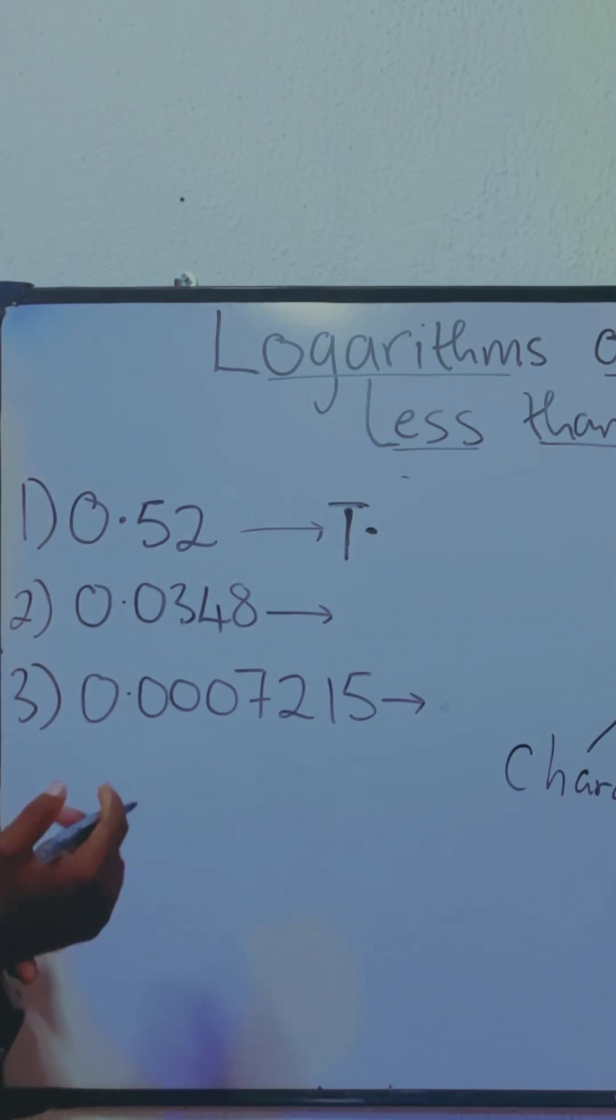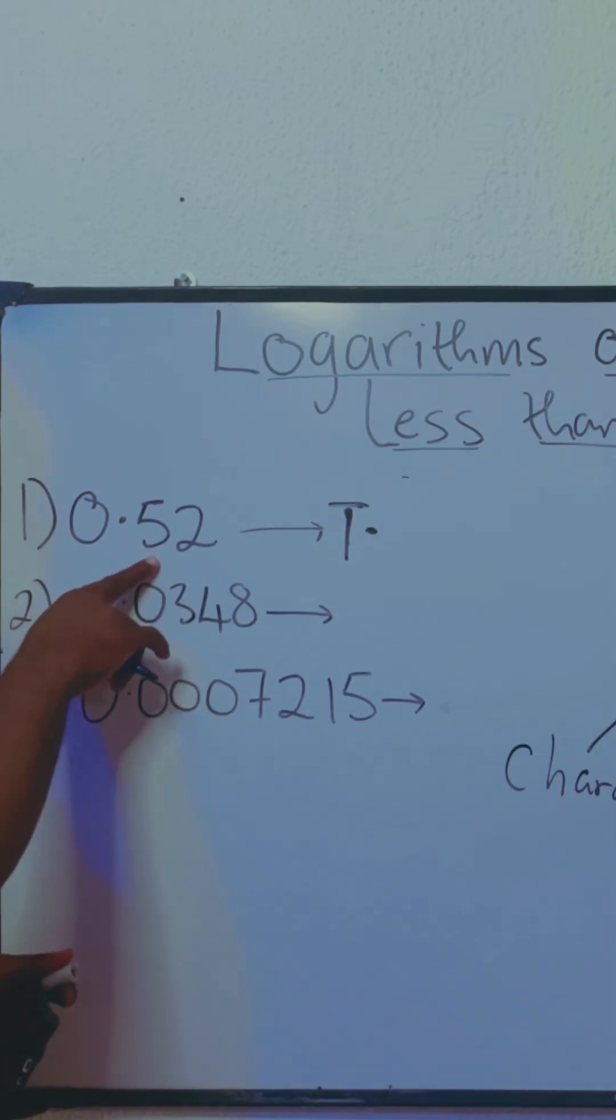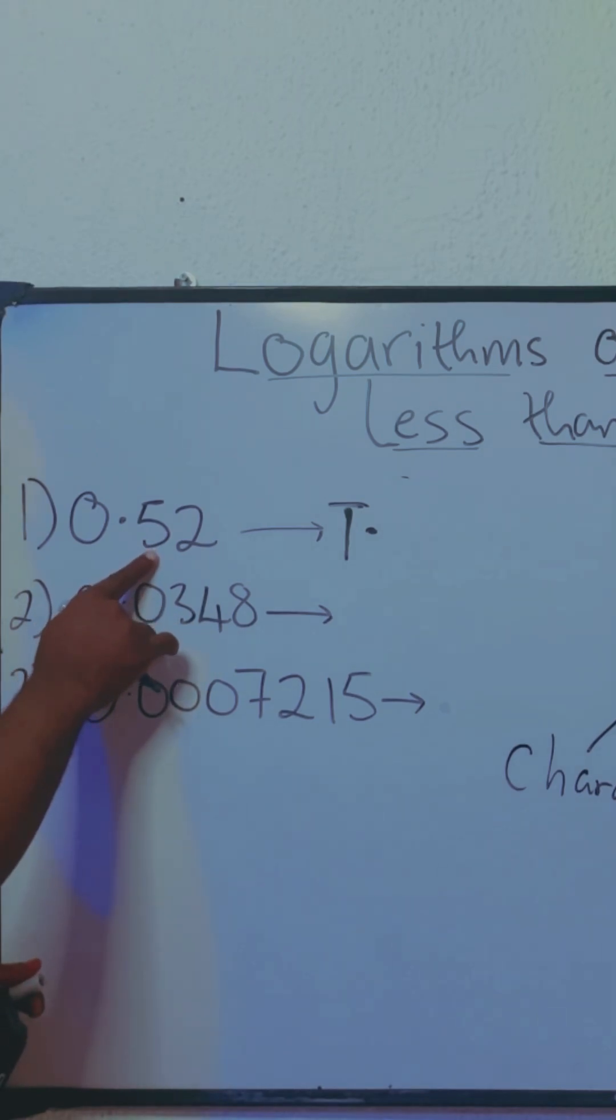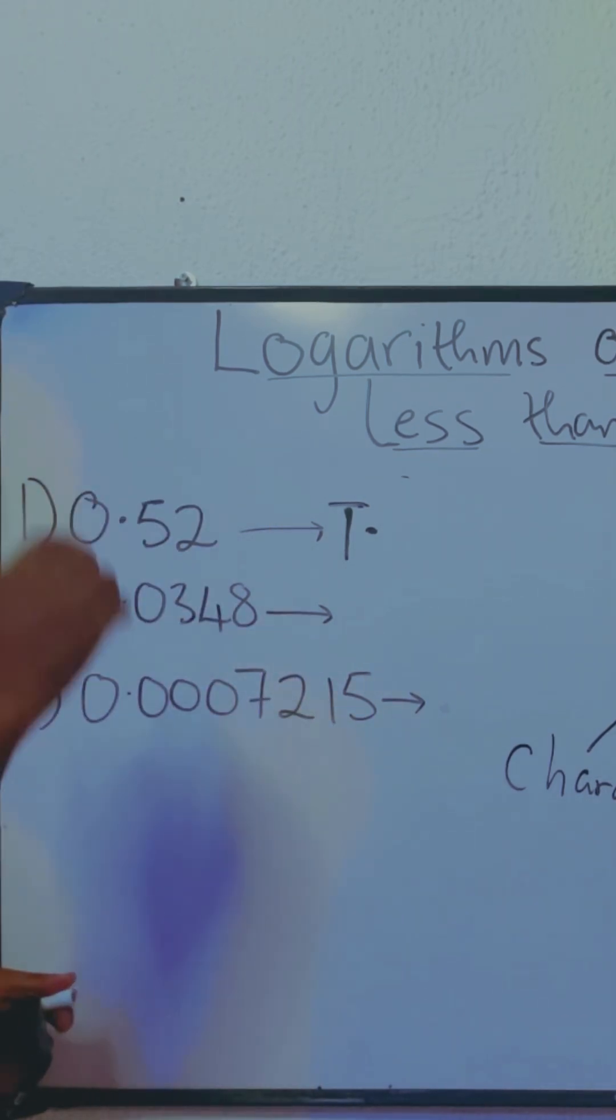So what's the next step? The next step is you are now going to find the logarithm of 5.2. So you must, after the first digit, put a point and then punch it in your calculator.